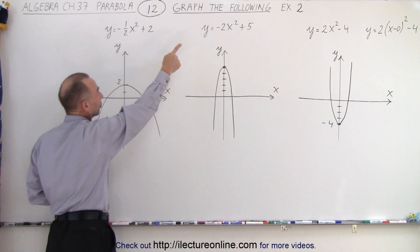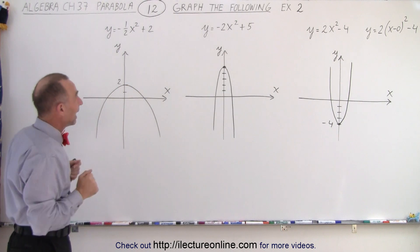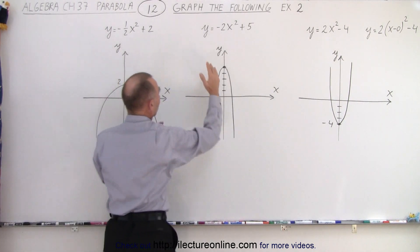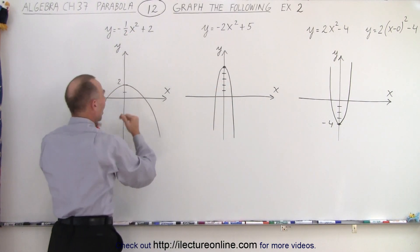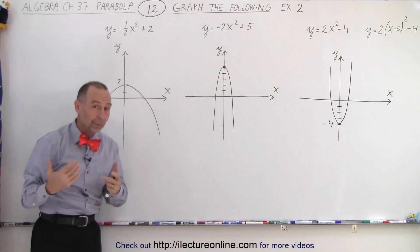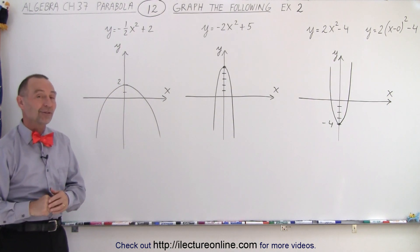And the constant means that it will be shifted up or down by the number of units indicated. The sign in front will determine if it's opening downward or upward. And if it's a 2, it will be skinnier. If it's a 1 half, it will be wider. So those are the general principles of graphing these kinds of equations.